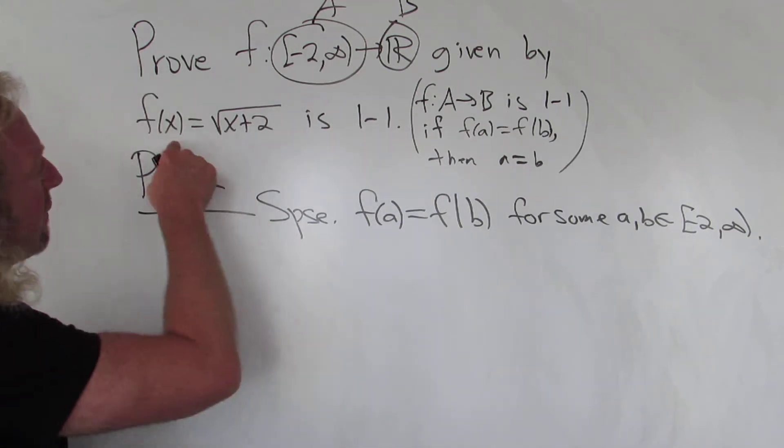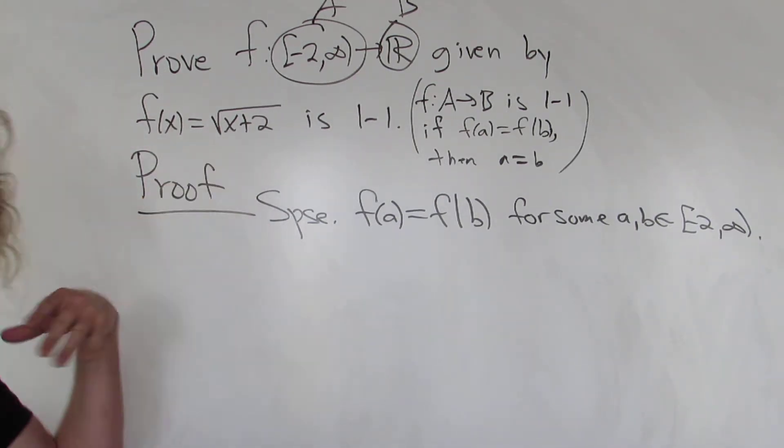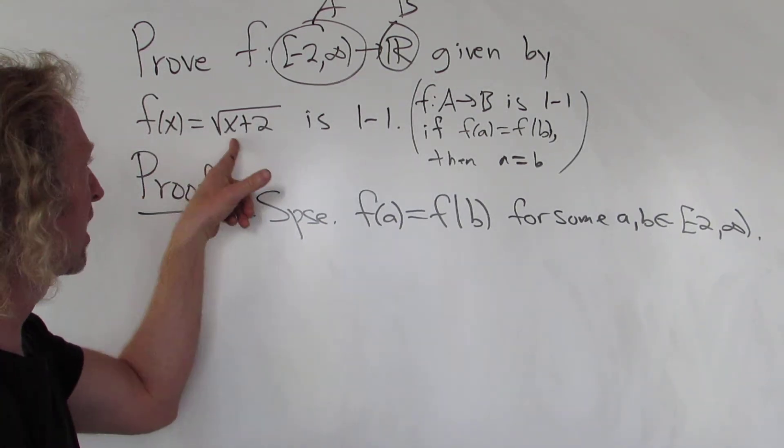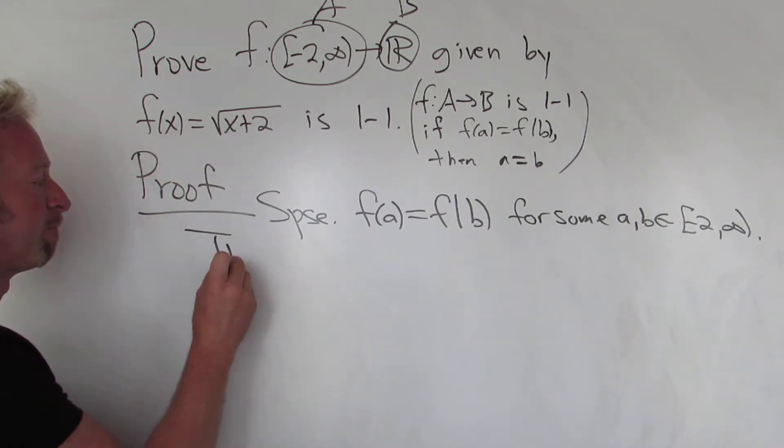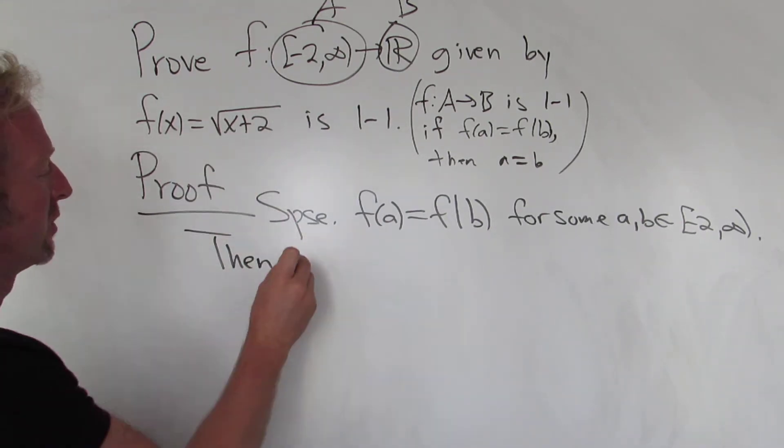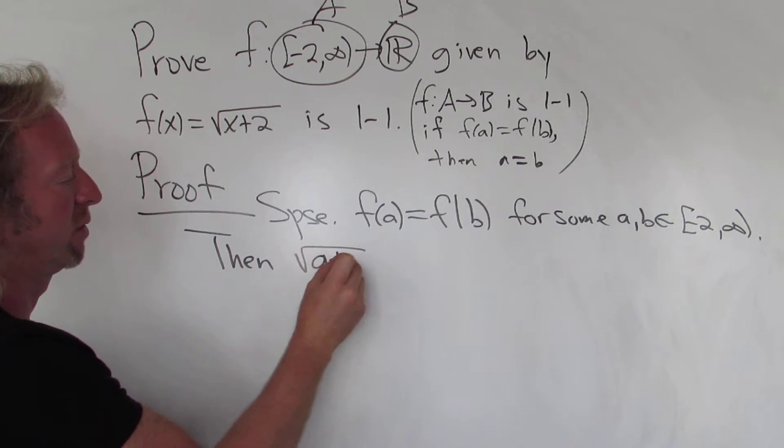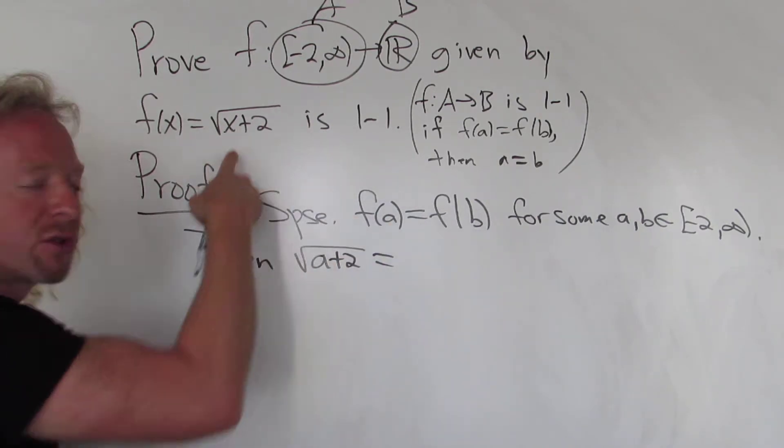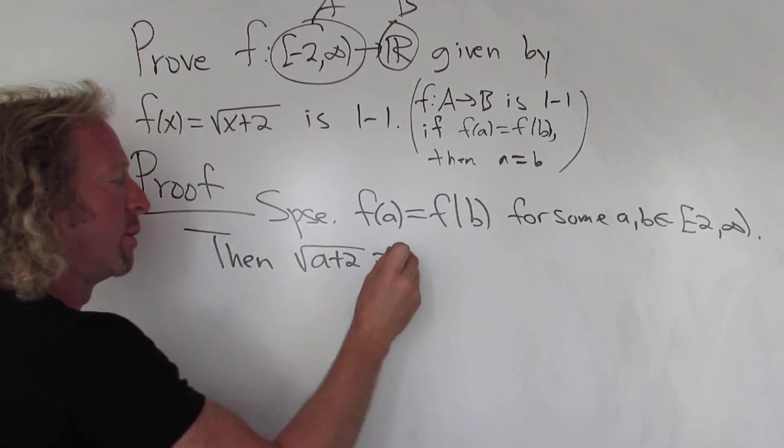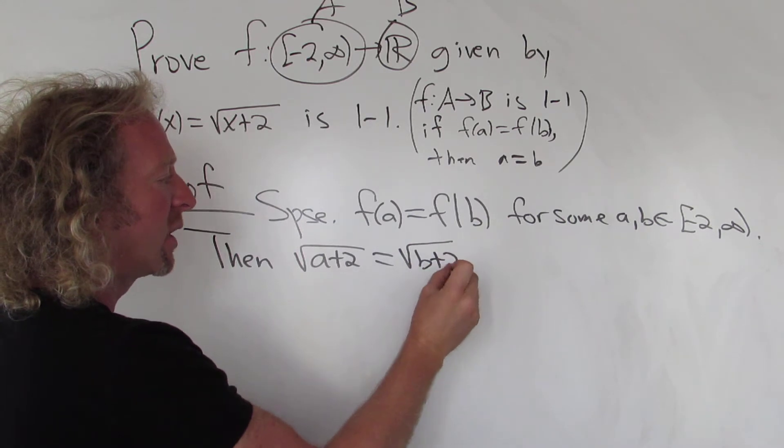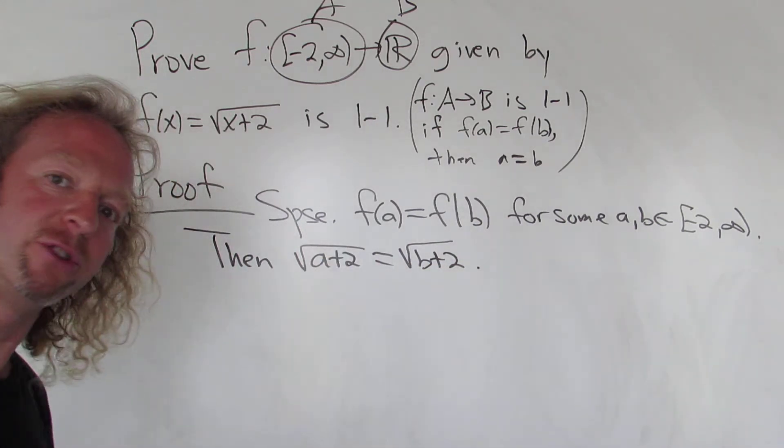Then you just write down what f(a) is. So f(x) is the square root of x plus 2. In this case you just replace x with a. So f(a) is the square root of a plus 2. And f(b) is the square root of b plus 2. And again we just have to show that a is equal to b.